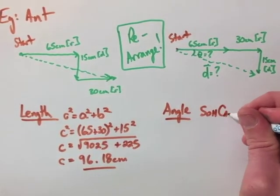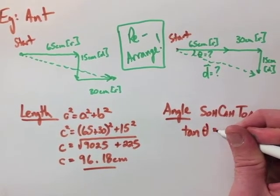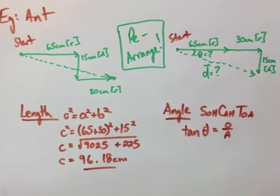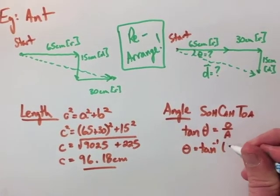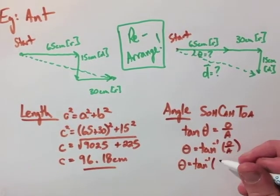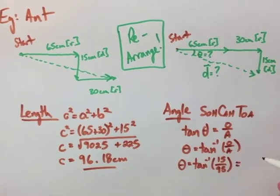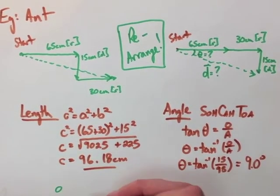We need to find the angle using SOHCAHTOA again. So we use tan because, again, we have our opposite and our adjacent. We sub in our values, and we get theta equals the tan inverse of opposite over adjacent, which ends up being 9 degrees. We then find our final displacement of the ant to be 96 centimeters forward and 9 degrees down.